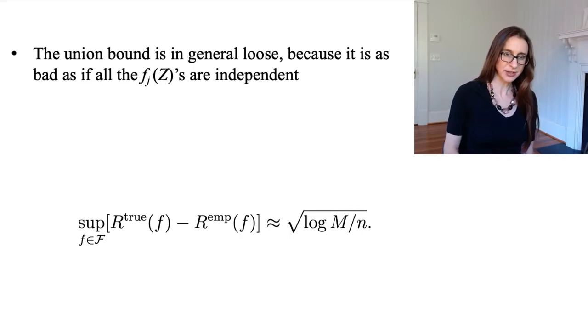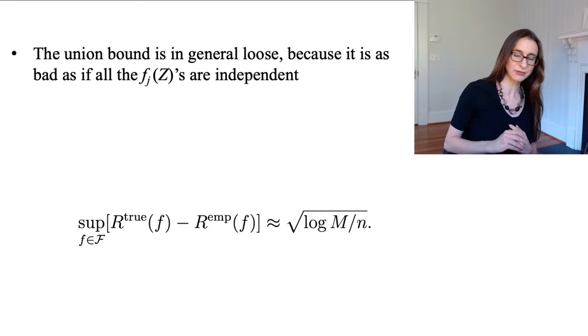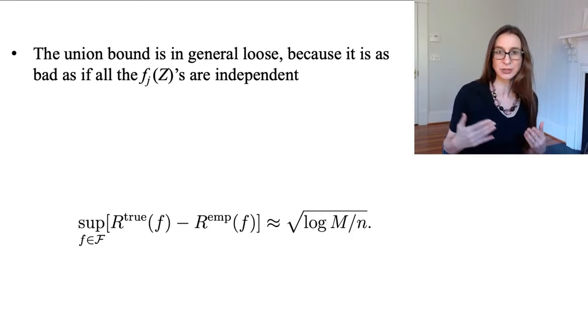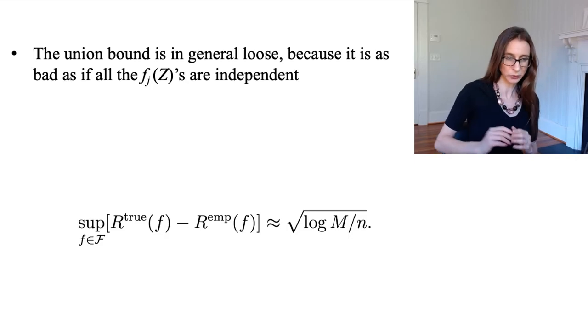Okay, now I should mention that the union bound, which we use for the Occam's razor bound, it's in general fairly loose because it is as bad as if all of the f_j's are independent, and we know that they're not, but that's the way the union bound works.